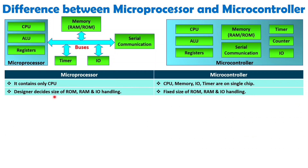With microprocessor, we externally interface memory, timer, IO, and serial communication ports. Here, the designer decides the size of ROM and RAM and what IO handling is needed — everything can be designed by the designer. Since these elements are interfaced externally, the designer has flexibility: you can change the size of memory. For example, the laptop I am recording this video on was initially having 8 GB RAM, but I increased it to 16 GB — that is possible because it uses a microprocessor. With microcontroller, it will have a fixed size of ROM, RAM, and IO handling as per the single chip.